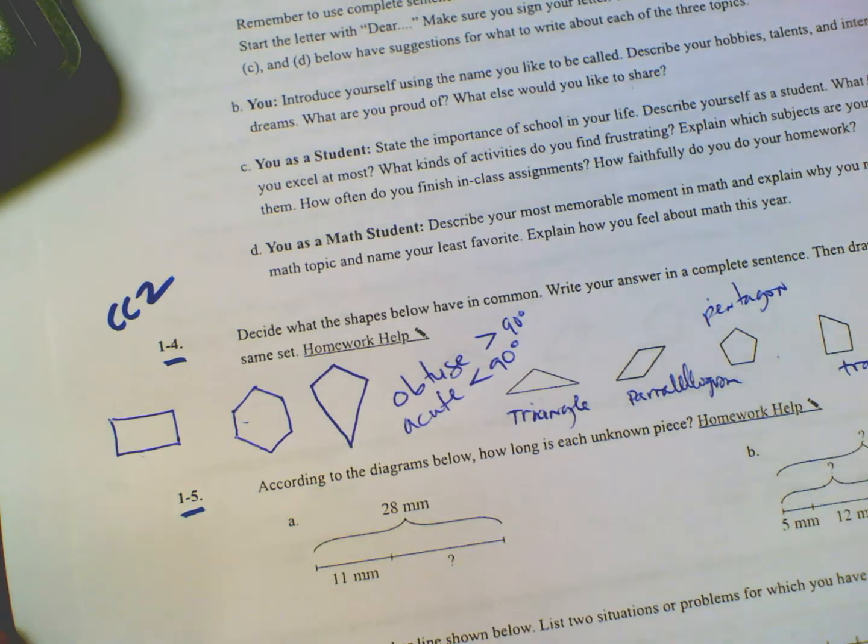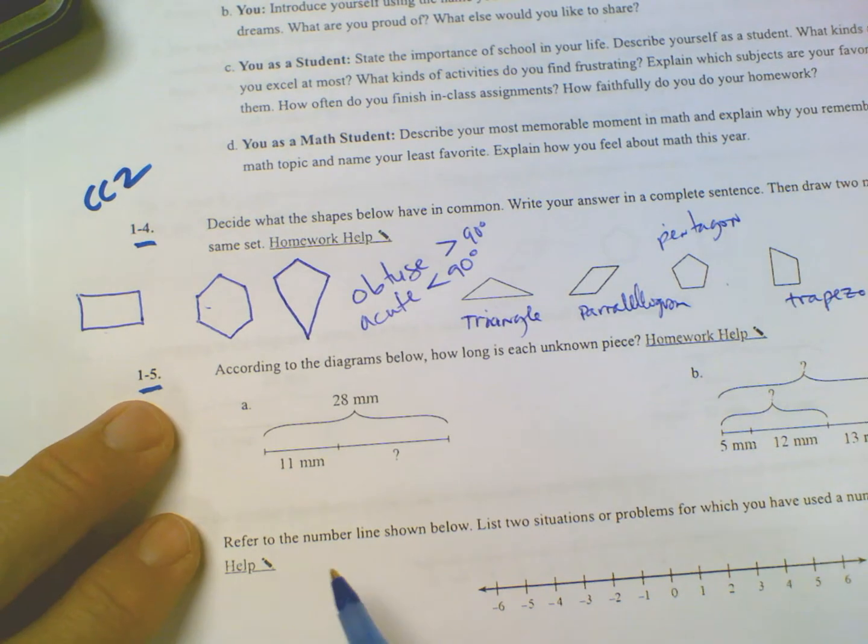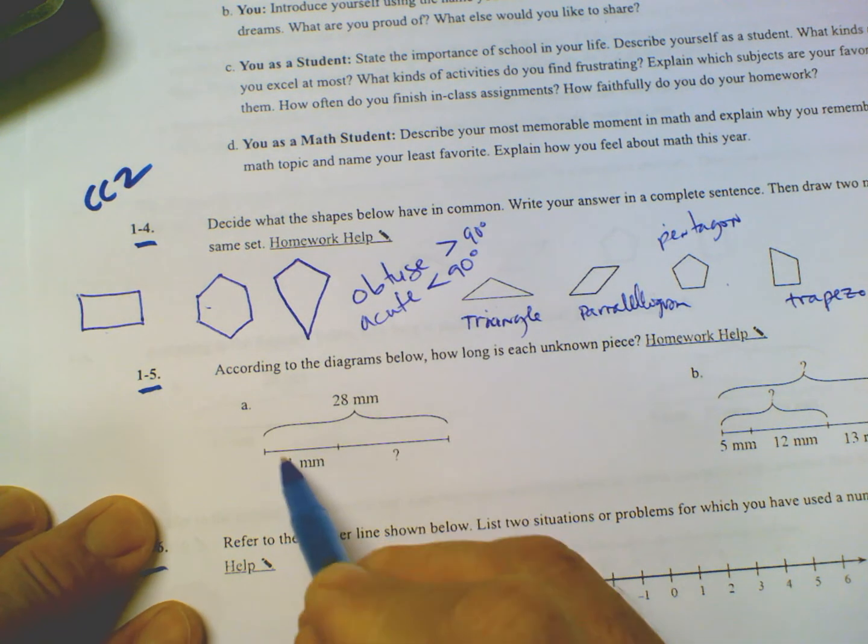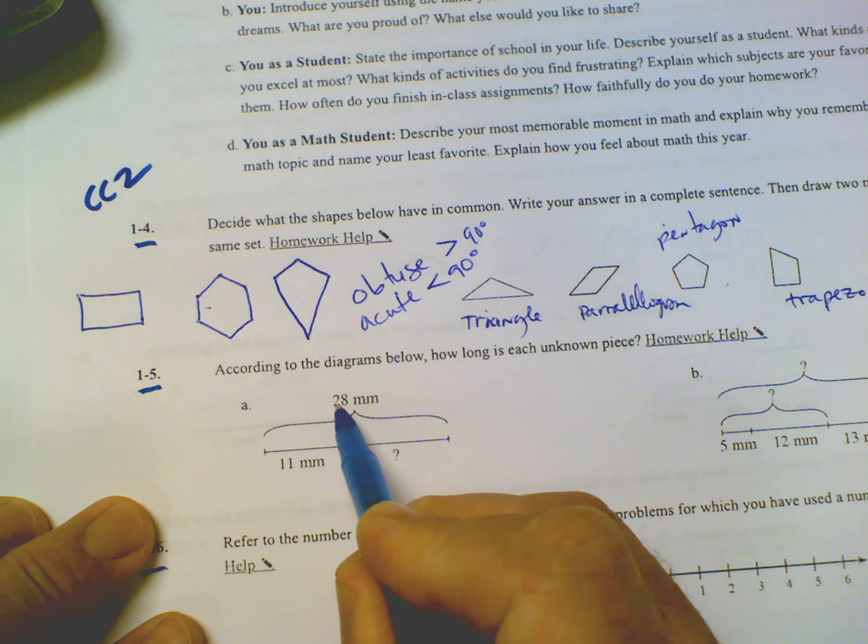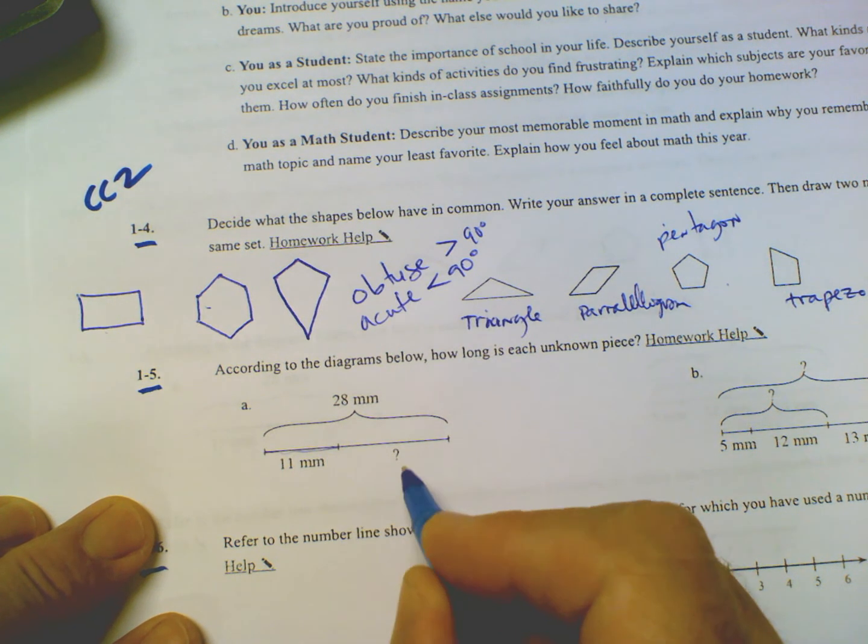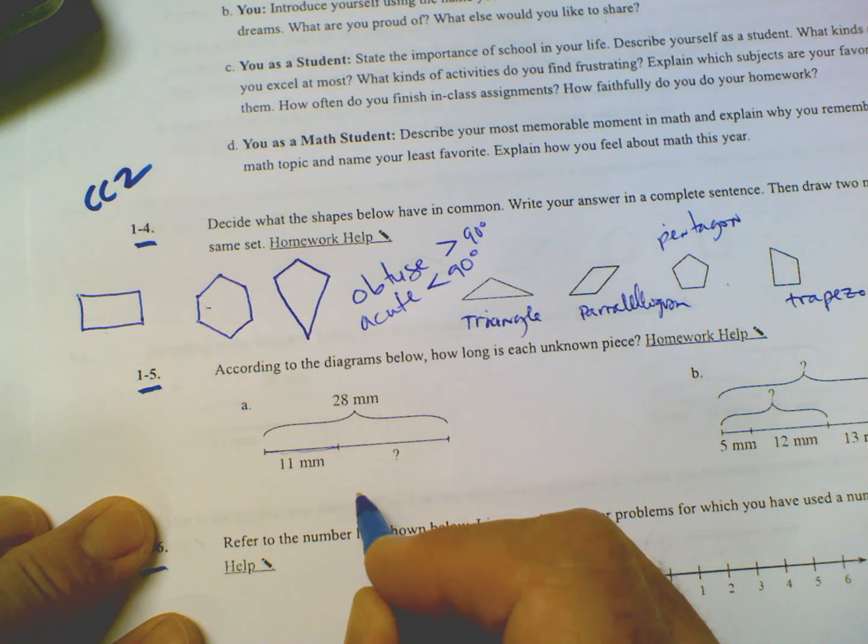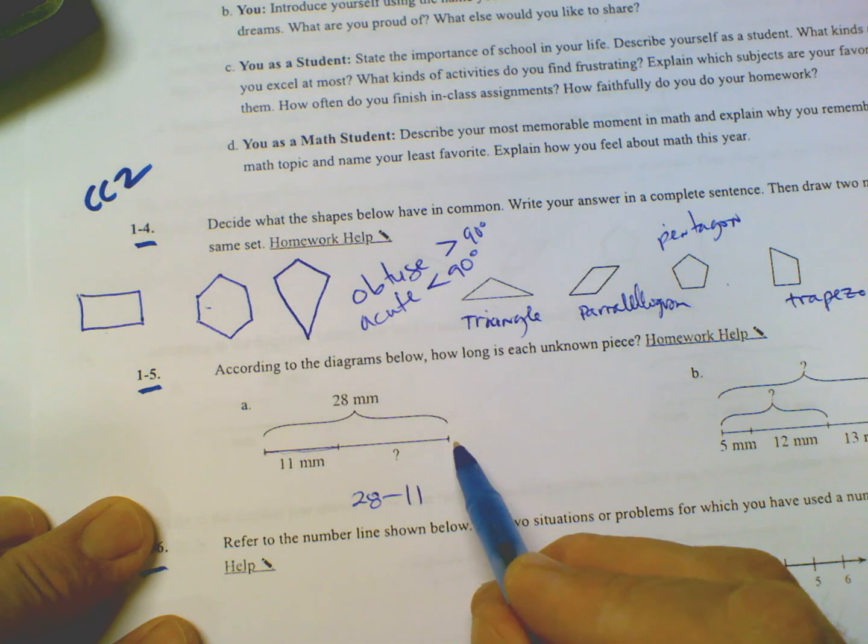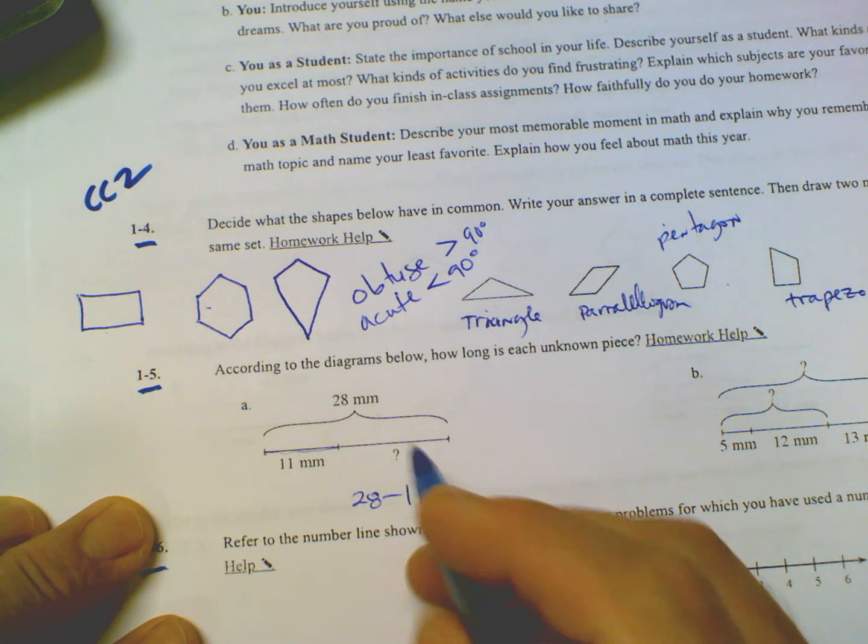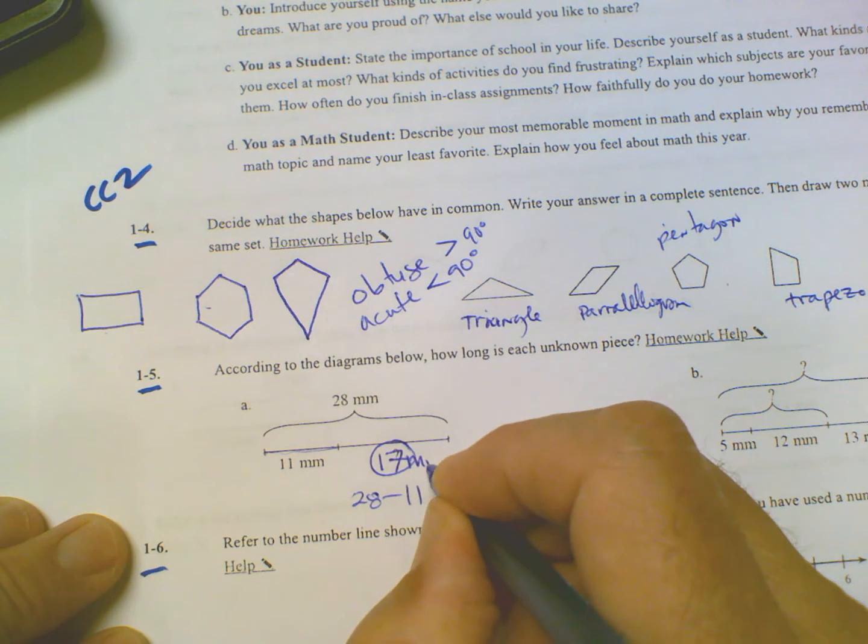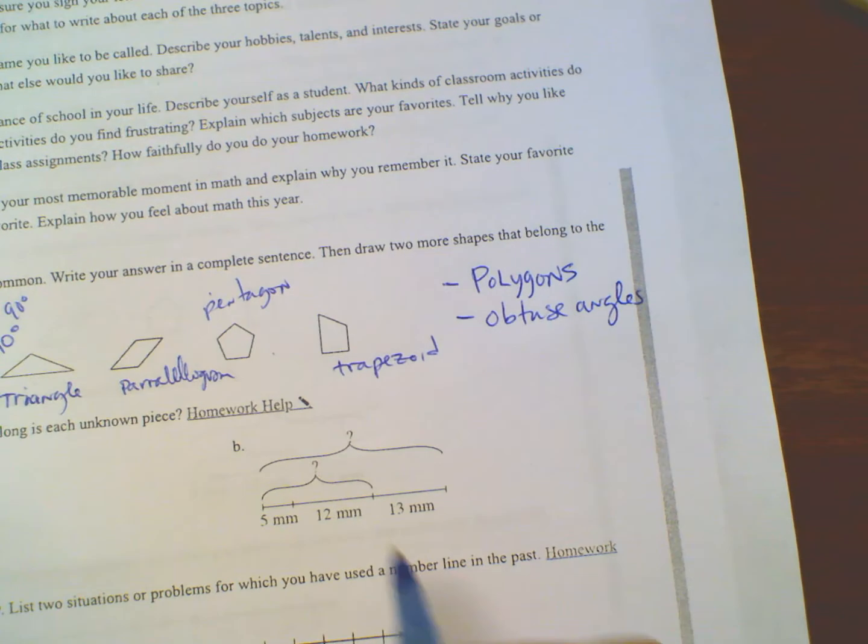Problem 1-5 wants me to figure out the missing sides. According to this diagram, from here to here, the whole thing is 28 millimeters, and then the shorter part here is 11 millimeters. So what is the missing side? Well, to find that out, that would be 28 minus 11. If the whole thing is 28 and just part of it's 11, well 28 minus 11 is 17. So that missing side is 17 millimeters.